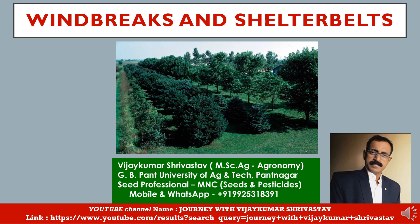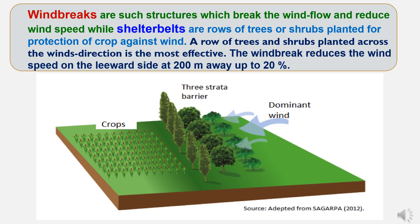So let's proceed to the presentation. Windbreaks are such structures which break the wind flow and reduce wind speed, while shelter belts are rows of trees or shrubs planted for protection of crops against wind. A row of trees and shrubs planted across the wind direction is the most effective. The windbreak reduces the wind speed on the leeward side at 200 meters away by up to 20 percent.